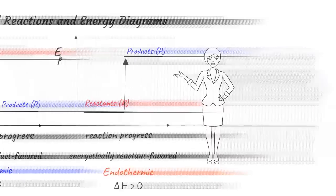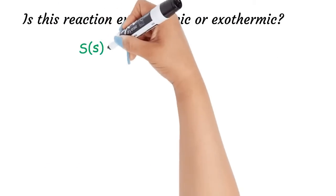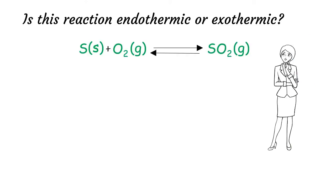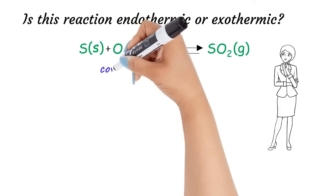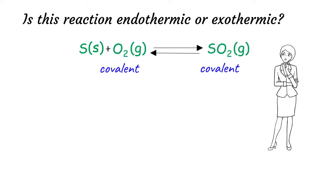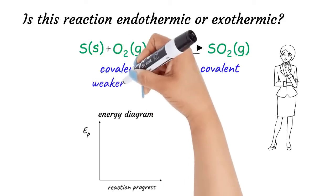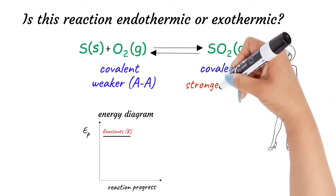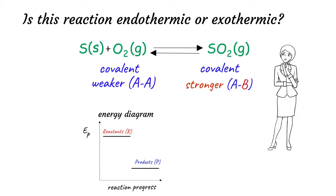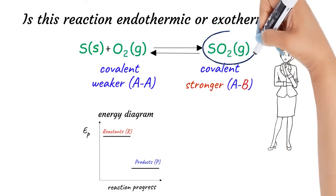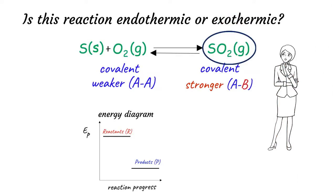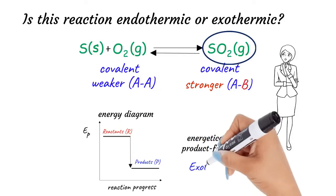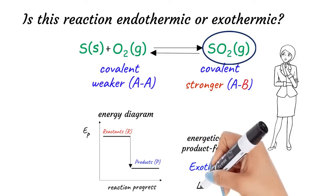Let's consider a few examples to apply what we know. The reaction between sulfur and oxygen produces sulfur dioxide. In this example, both reactants and products have molecular compounds with covalent bonds. Here, all the covalent bonds on the reactant side are weaker AA bonds with higher potential energy, while on the product side we have stronger AB bonds with lower potential energy. Therefore, we can expect the products to be more energetically stable than the reactants. Thus, we can predict that this reaction is energetically product favored — in other words, exothermic — with a negative delta H value.